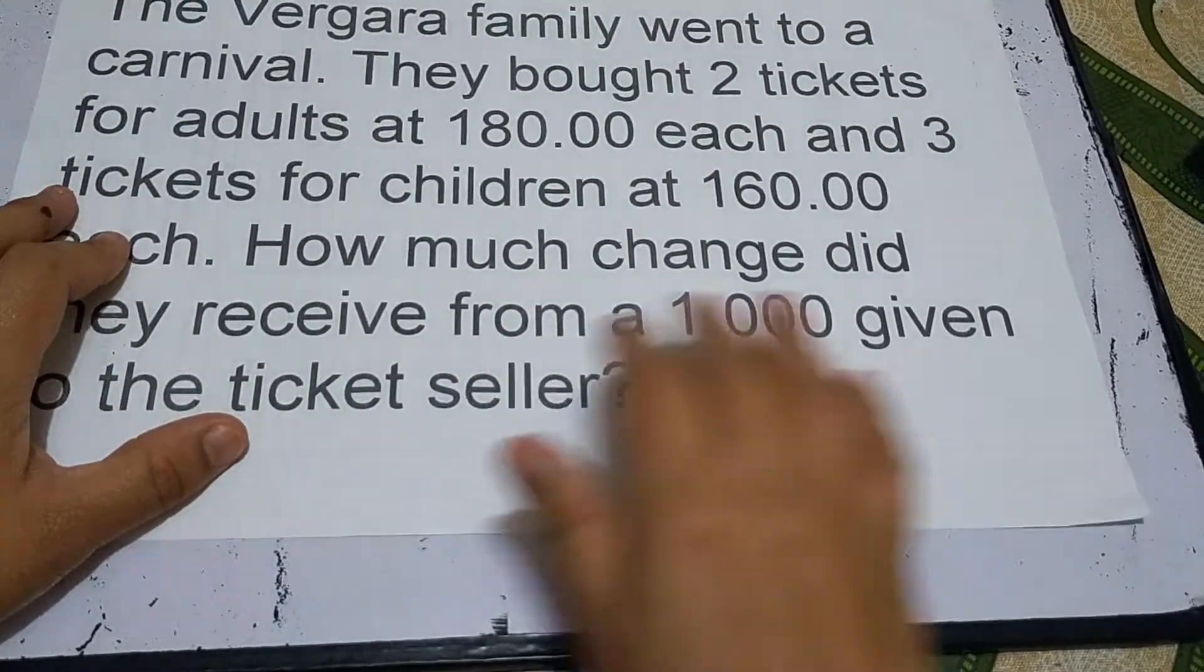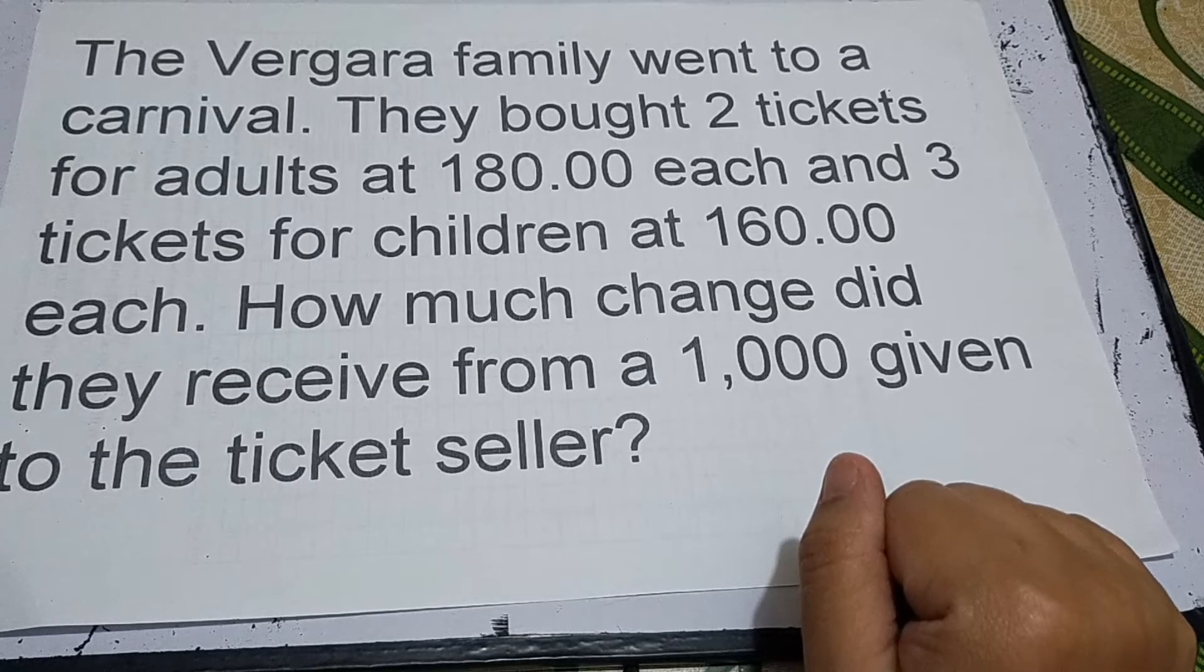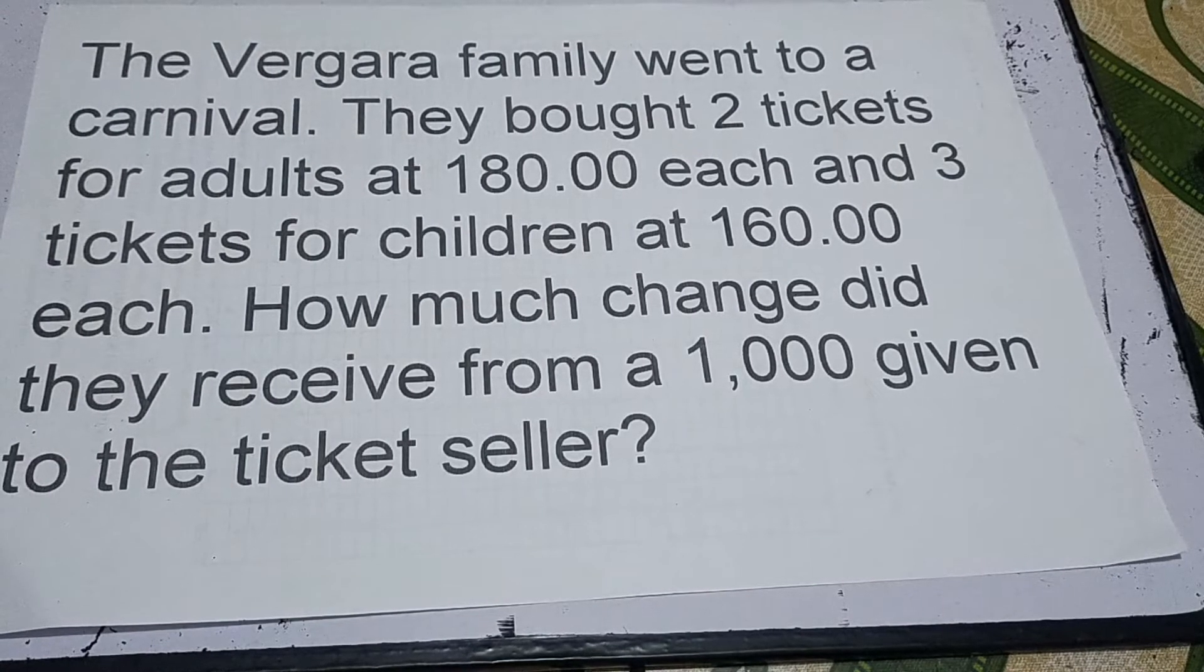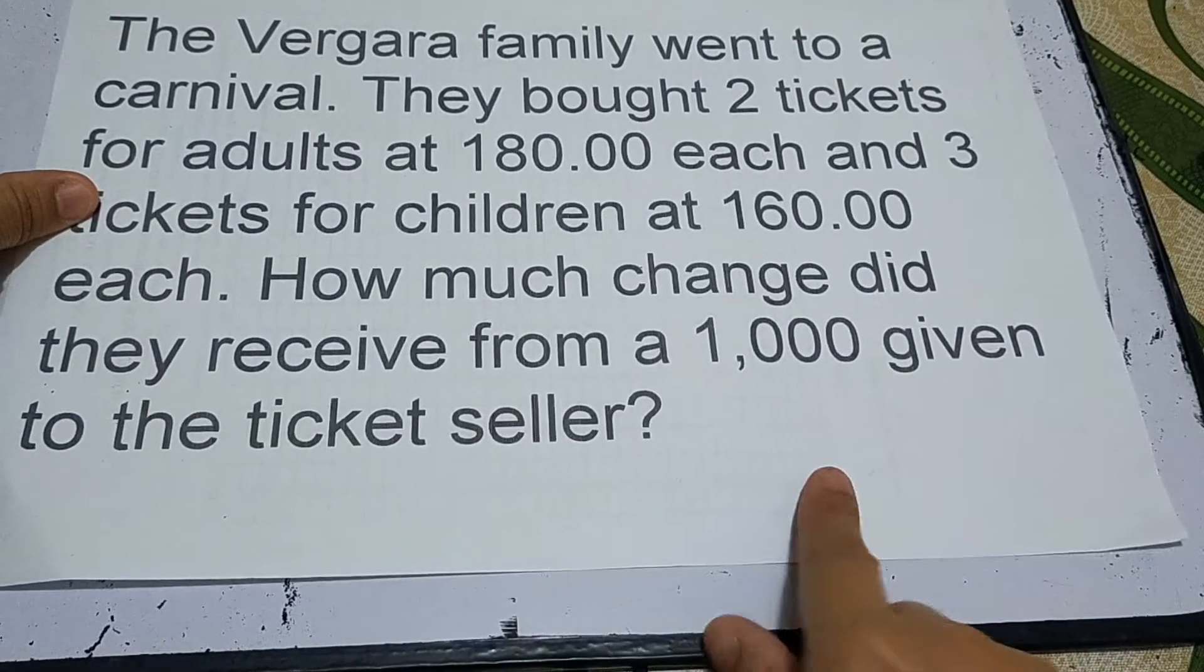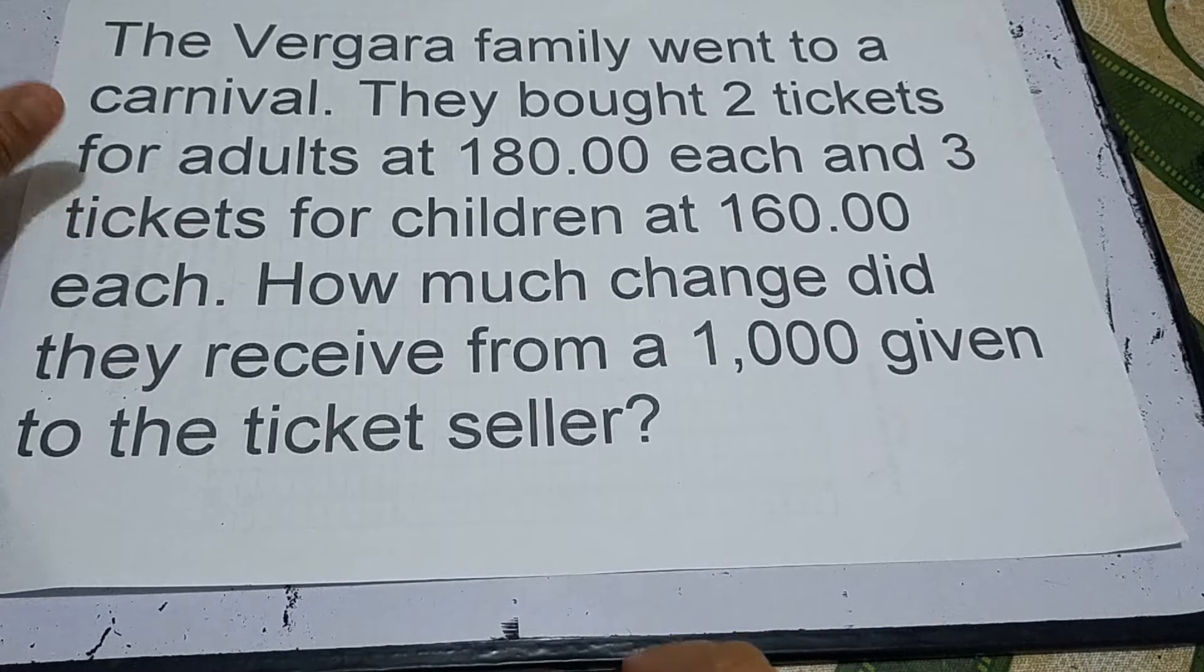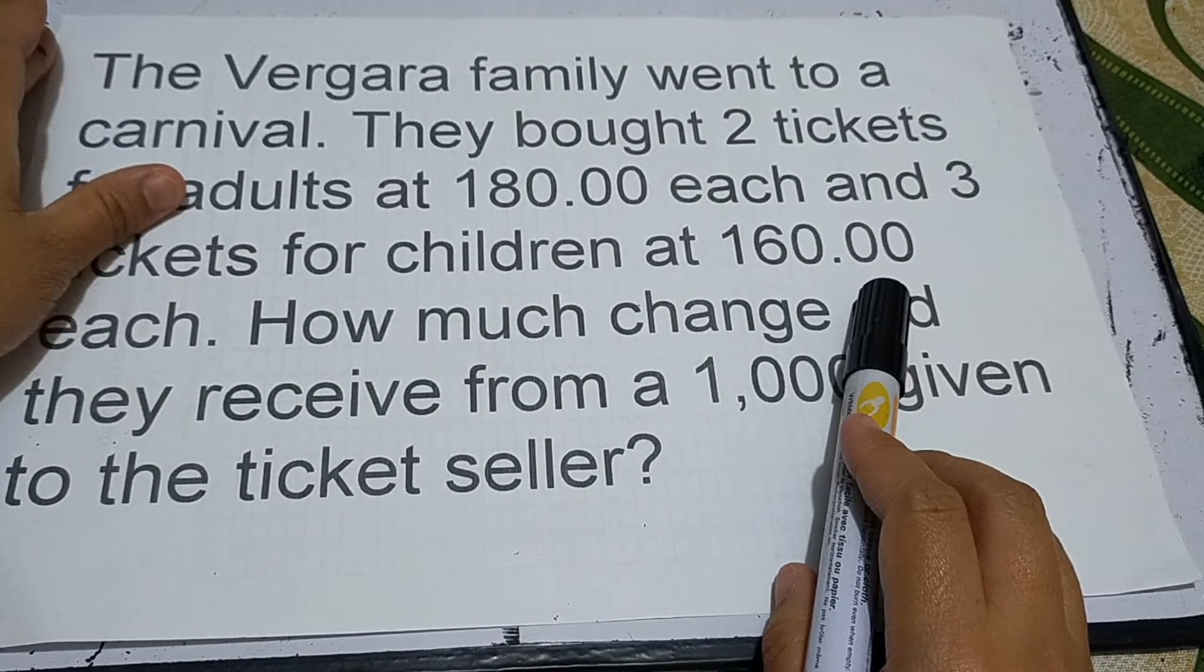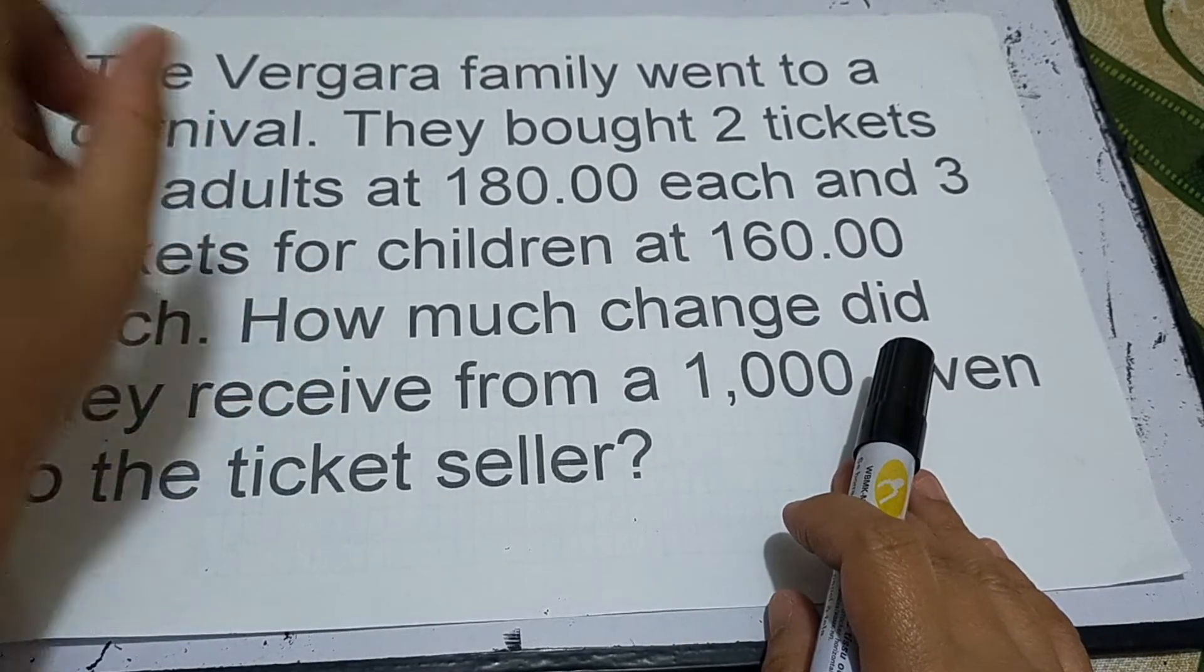Here's another problem. The Bergara family went to a carnival. They bought 2 tickets for adults at 180 pesos each and 3 tickets for children at 160 pesos each. How much change did they receive from a 1,000 peso bill given to the ticket seller? Let's use the four-step plan. Number one is understand. Under understand is what is asked: the amount of change did they receive from the 1,000 peso bill given to the ticket seller.